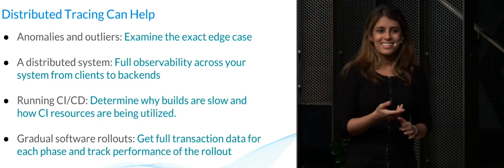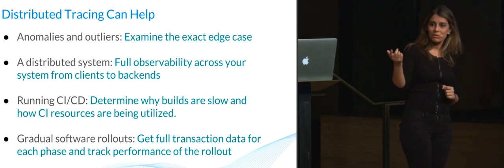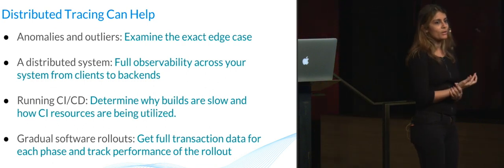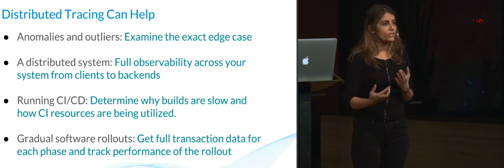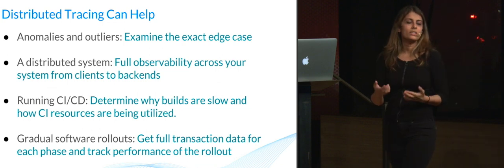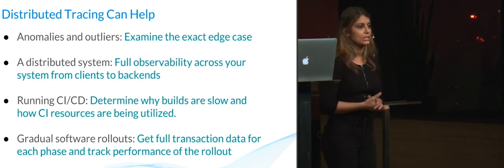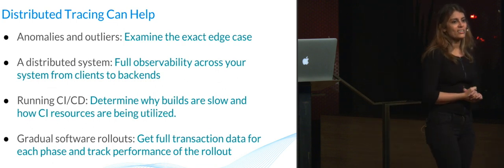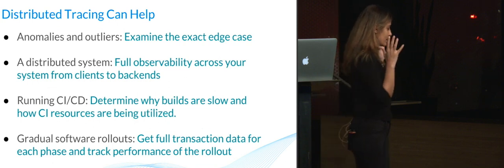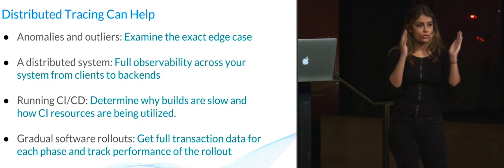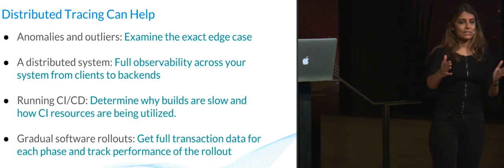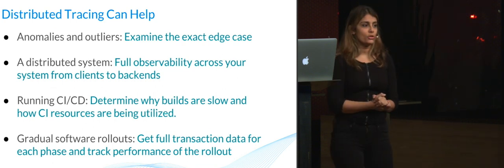How many of you here run CICD? All right, a bunch here too. So when you're running CICD, it's great that you can ship faster, but also there can be problems with your builds and you need to understand what the issue is. Oftentimes it's not the code, but actually the resources being utilized. And with tracing, you can pinpoint that as the issue if it is the case. Andrea mentioned gradual software rollouts with feature flags — if you're doing that, you want to analyze the full transaction data of each rollout to look at the performance, see what errors were there, and make informed choices about the next rollout. And that is something that distributed tracing can provide you.